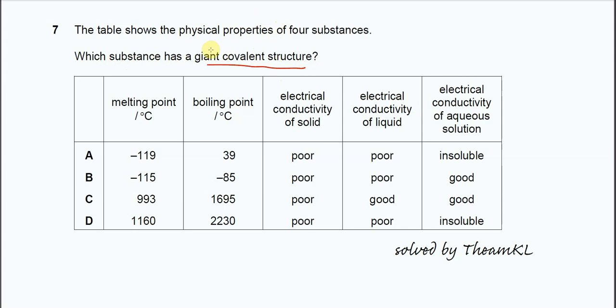For a substance with giant covalent structure, we know that the melting point and boiling point is relatively higher, which means A and B cannot be the answer. Because the melting point and boiling point for A and B are quite low, these two cannot be the answer. Most likely these two will be simple structure. So it's just C or D now.